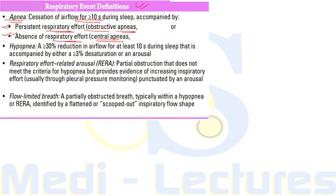Hypopnea is defined as more than or equal to 30 percent reduction in airflow for at least 10 seconds. So apnea is complete cessation and hypopnea is more than or equal to 30 percent reduction in airflow. It should be accompanied by either a 3 percent or more desaturation or an arousal of the patient.